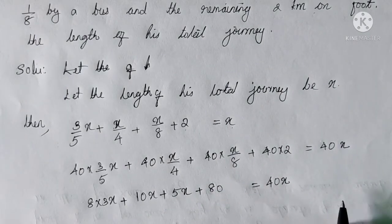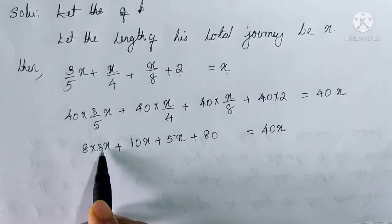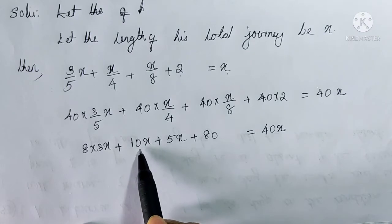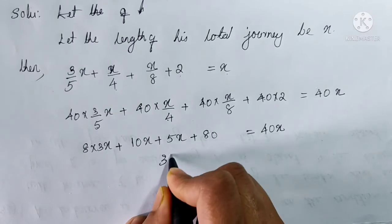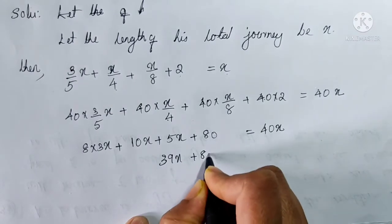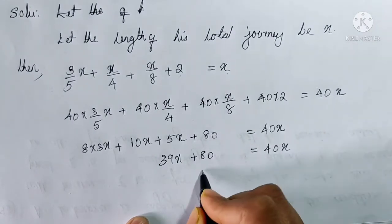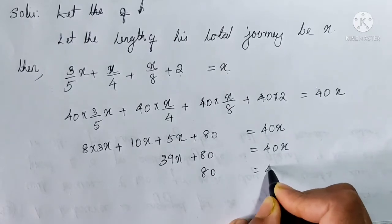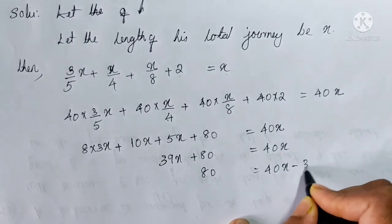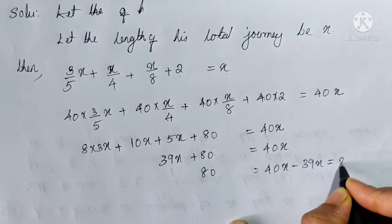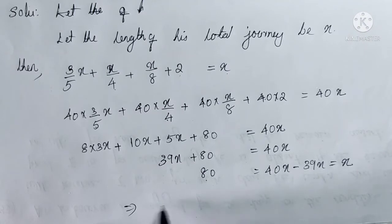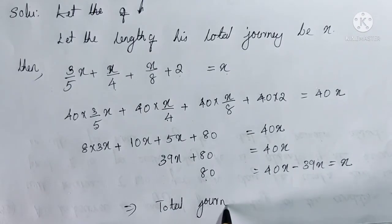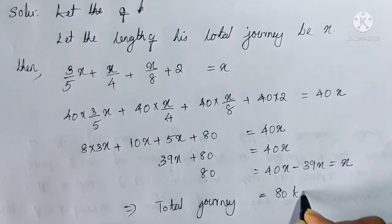Now we can add all the terms of X. 8 threes are 24X, plus 10X is 34X, plus 5X is 39X. So 39X plus 80 is equal to 40X. That is, 80 is equal to 40X minus 39X, which equals X. Therefore X is equal to 80, which means the total journey is equal to 80 km.